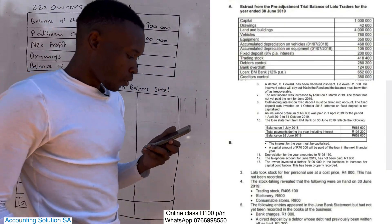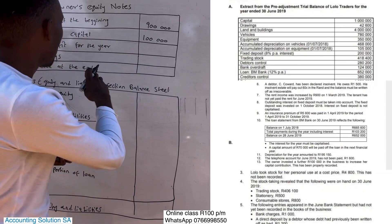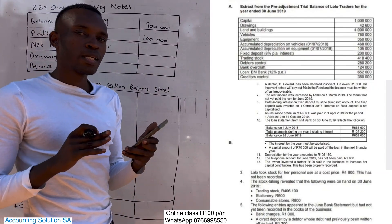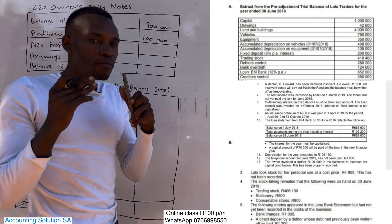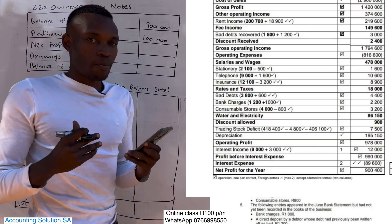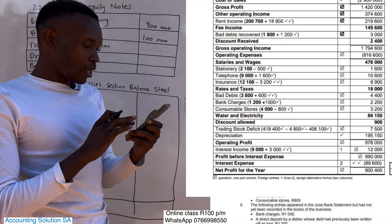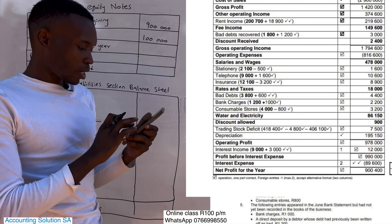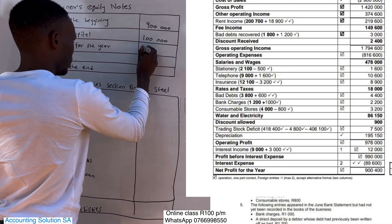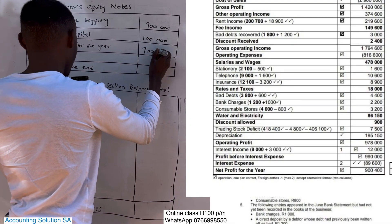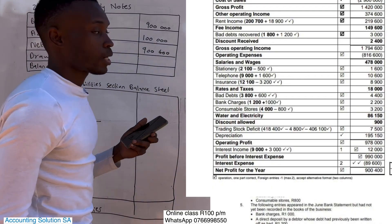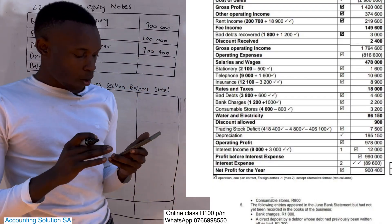Now we are going to net profit for the year. Net profit for the year we got from the previous video of the income statement that we prepared. The balance that we got — I will show the income statement on this side — it was 900,400.